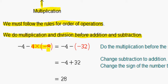4 times negative 8 is negative 32. Then we have negative 4 minus negative 32. We have double negatives, so that's the same as saying negative 4 plus 32. Negative 4 plus 32 is 28.